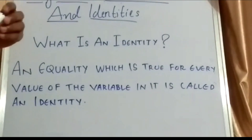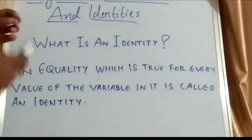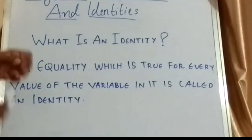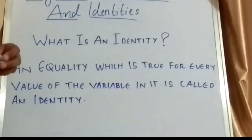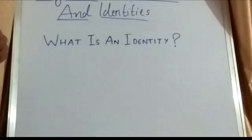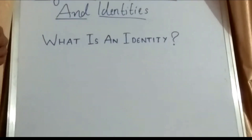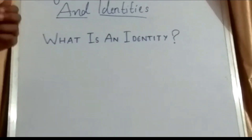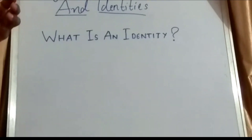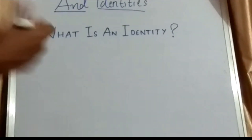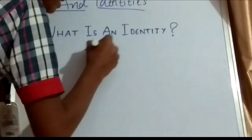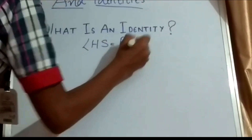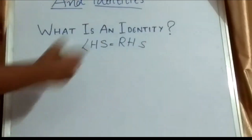What is an identity? An equality which is true for every value of the variable in it is called an identity. It means that in an identity, if we give any value — that is 1, 2, 3, etc. — to the variable in it, we come to a conclusion that LHS is equal to RHS, that is, left hand side is equal to right hand side.